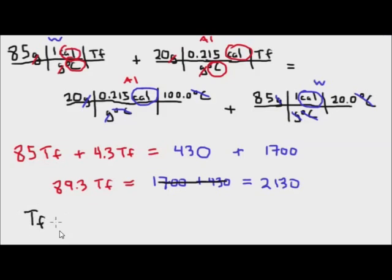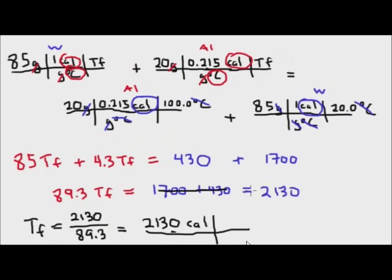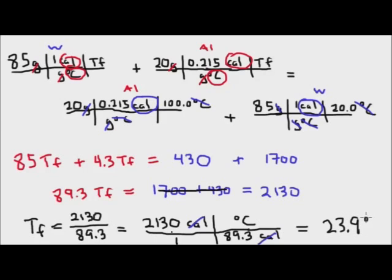Solving for Tf: Tf equals 2,130 divided by 89.3. In dimensional analysis, 2,130 calories divided by 89.3 calories per degree Celsius — the calories cancel, leaving units of degree Celsius. Because all values in the problem had three significant digits or more, I'll report the final answer with three significant digits. The final temperature is 23.9 degrees Celsius.